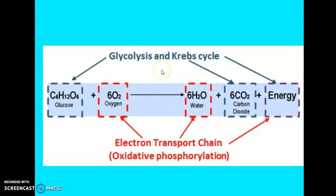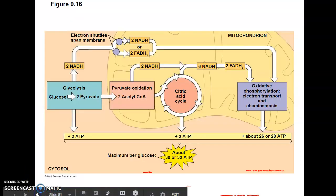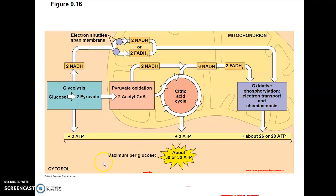Looking at what each pathway uses and produces: glycolysis takes glucose as input; the citric acid cycle outputs carbon dioxide and energy; and for the electron transport chain and oxidative phosphorylation, the input is oxygen and the output is water. We just went through oxidative phosphorylation, which has two parts — the electron transport chain and chemiosmosis.